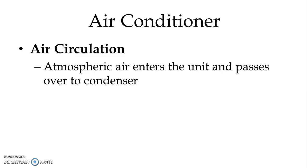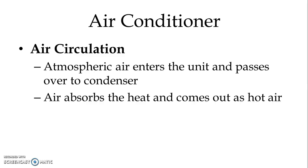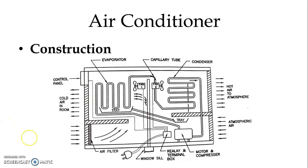Atmospheric air enters the unit and passes over the condenser. The air absorbs the heat and comes out as hot air. From the lower side, air from the room will enter the unit through the air filter, pass through the evaporator where heat is absorbed from the air, and then cool air is again spread to the room.